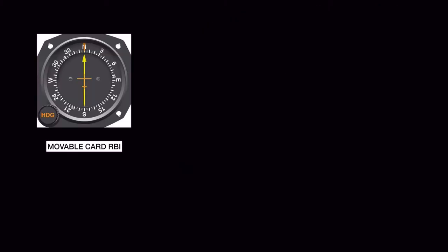There are two types of RBIs. One has a moveable compass card with a heading knob. You use this knob to move the card and set whatever heading your aircraft is flying. This way you can directly get the magnetic bearing to the station with respect to your aircraft's current heading — the relative bearing shown is relative to the set heading.